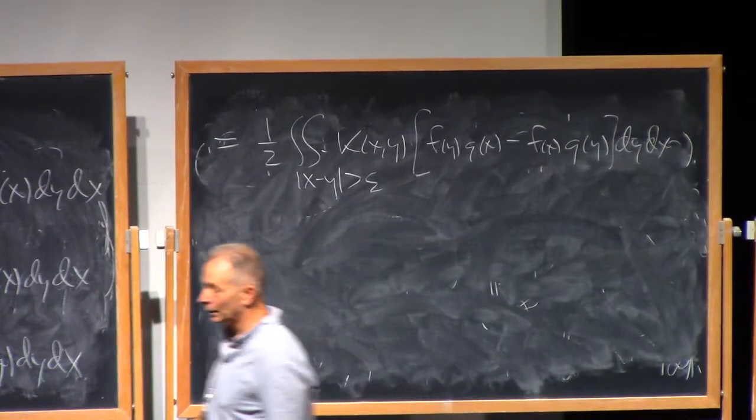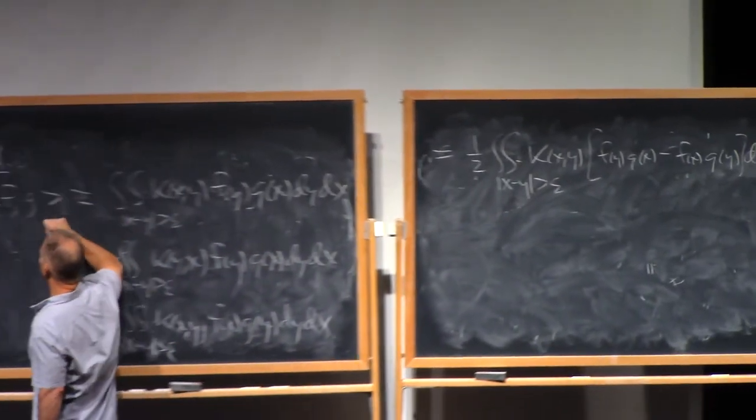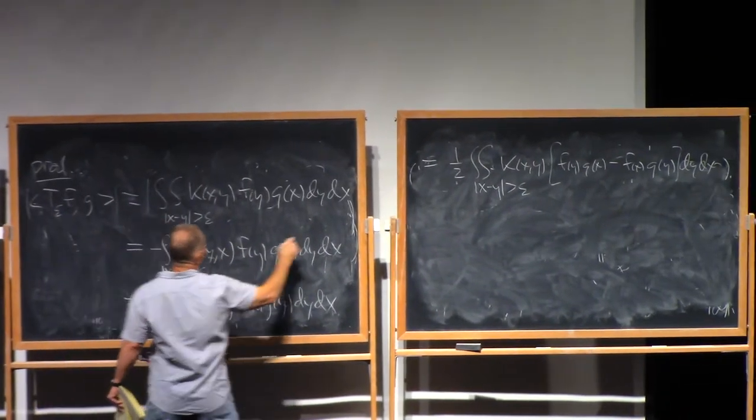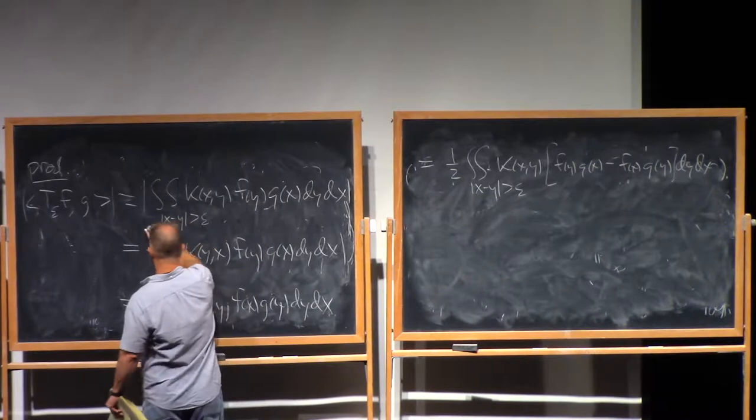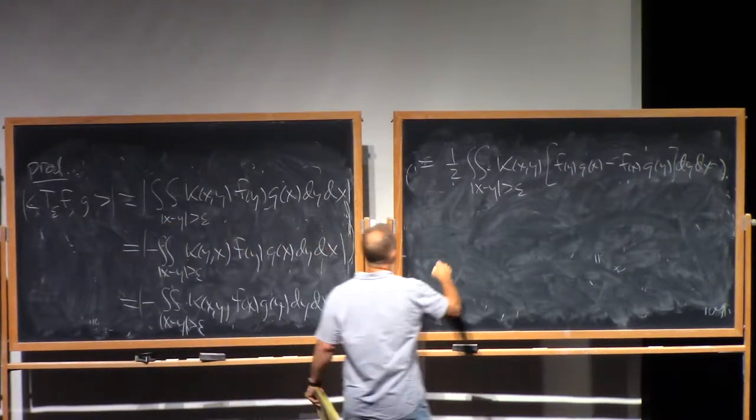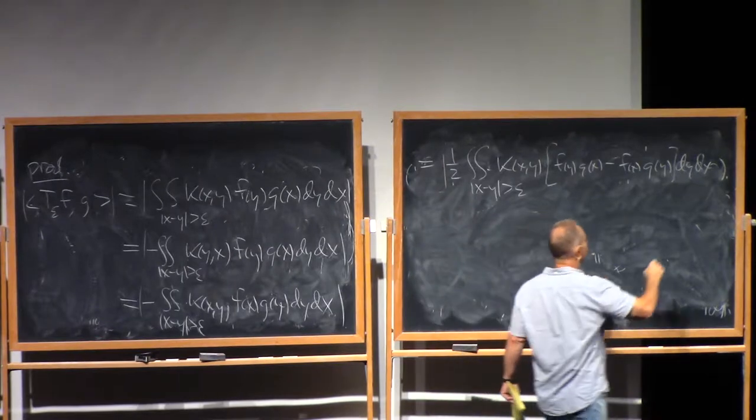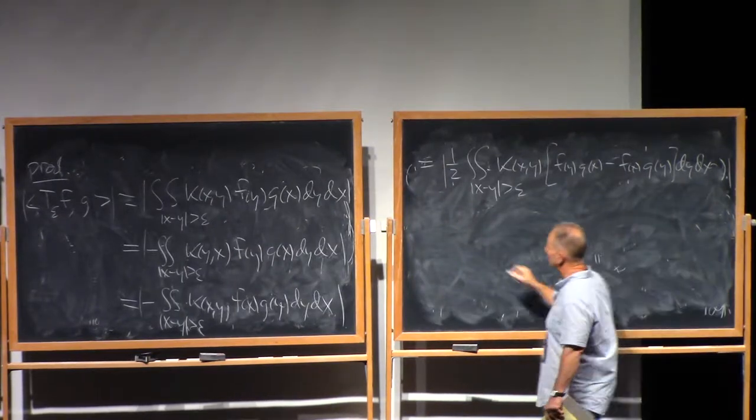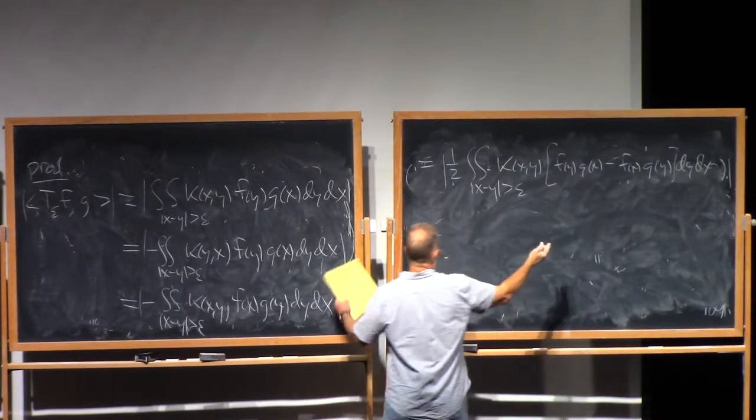So this is the same as one-half integral where x minus y is bigger than epsilon k of xy times f of y g of x minus f of x g of y dy dx. And now I'm going to take absolute values and bring an absolute value all the way in.